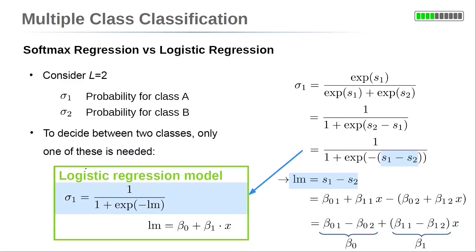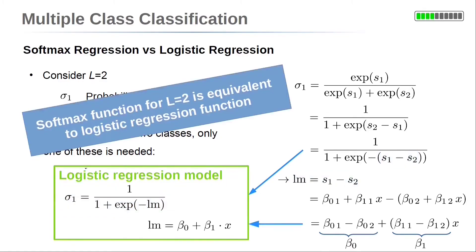Then the probability σ_1 is 1 / (1 + exp(-[β_0 + β_1 × x])). So the softmax regression model with L = 2 reduces to logistic regression.